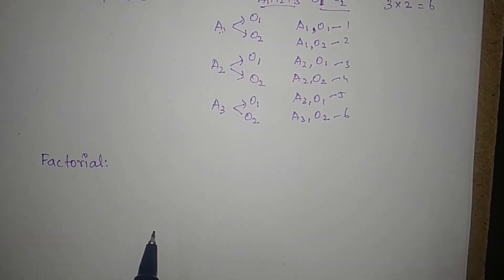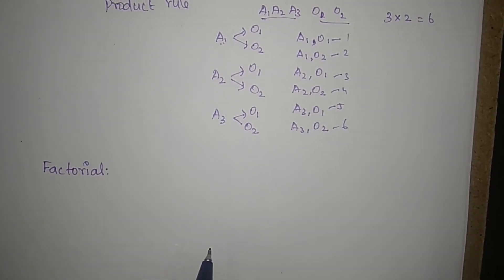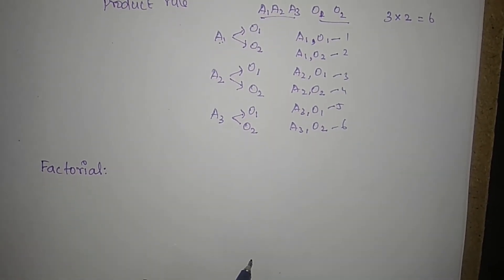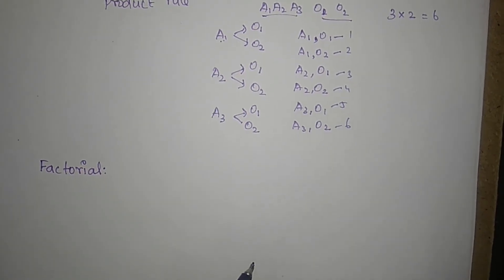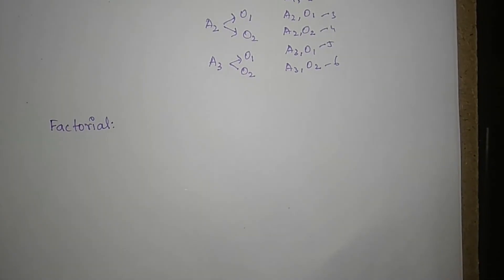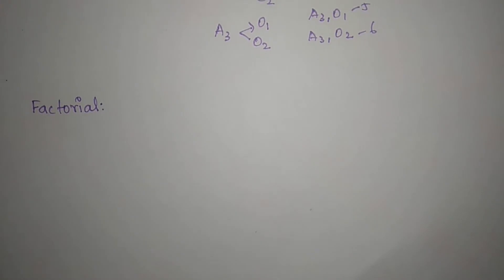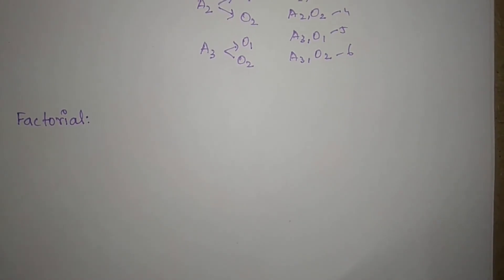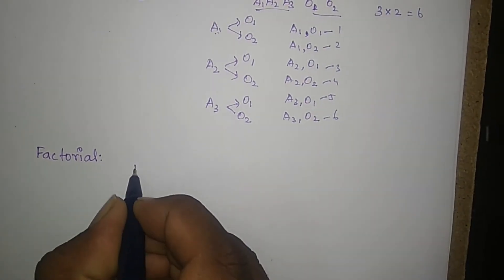Now I'm going to tell you about factorial. So factorial — it is nothing but the multiple of the first n natural numbers, and that is the factorial. So n factorial — that is the general form. The factorial uses an exclamation mark symbol.